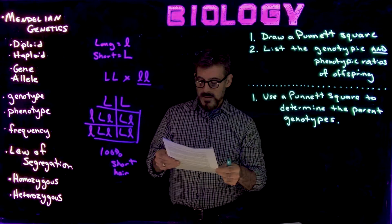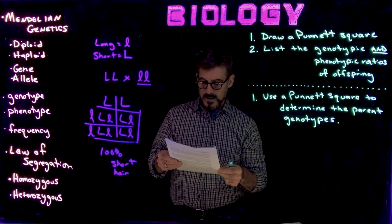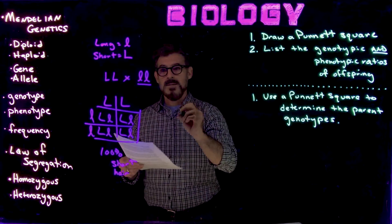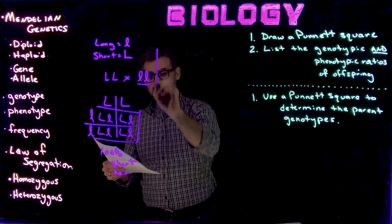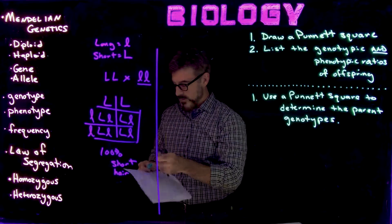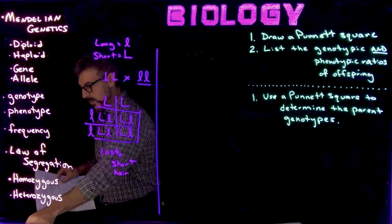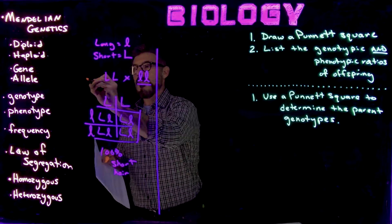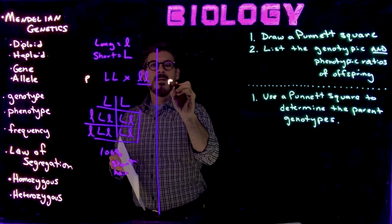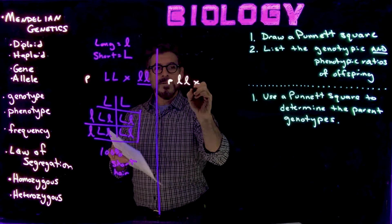And this next example says two cats are mated. One parent cat is long-haired or recessive. So this is a second example here. I'll use a different color just so we see it's a different example problem. So now here one parent, this is the parent generation, one parent generation here is like this.